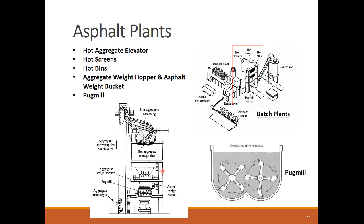The last and most visible part of the batch plant is its mixing tower, which houses the hot aggregate elevator, hot screens, hot bins, aggregate weight hopper, asphalt weight bucket, and pug mill or mixer. The elevator delivers the aggregate to the hot screens, which split it into four hot bins. The mix ingredients are controlled using the weight hopper and buckets and then dumped into the pug mill for mixing. The delivery trucks drive under the tower to load the asphalt mix and deliver it to the site.